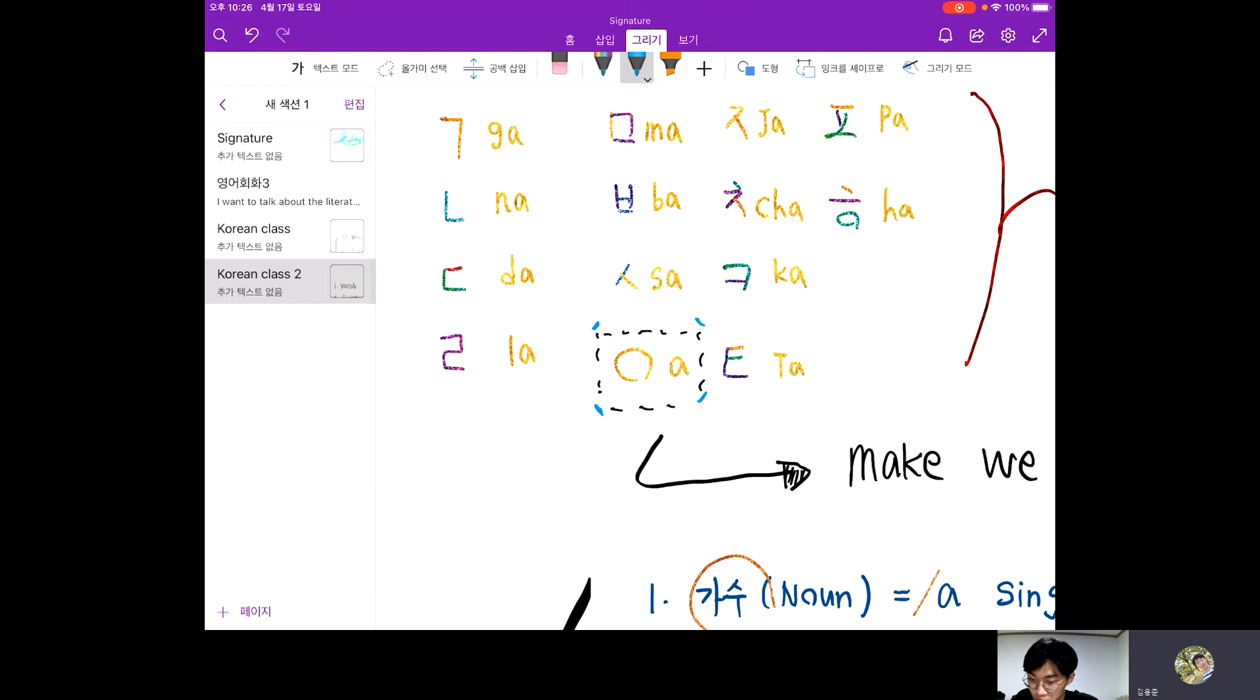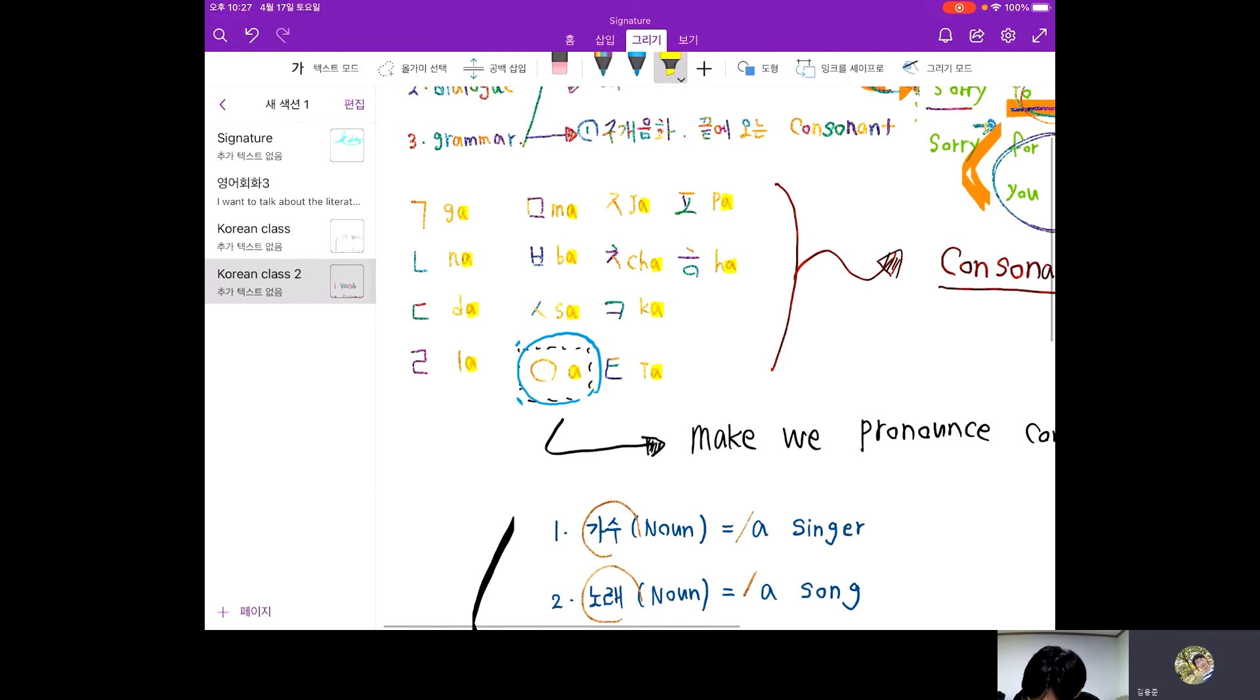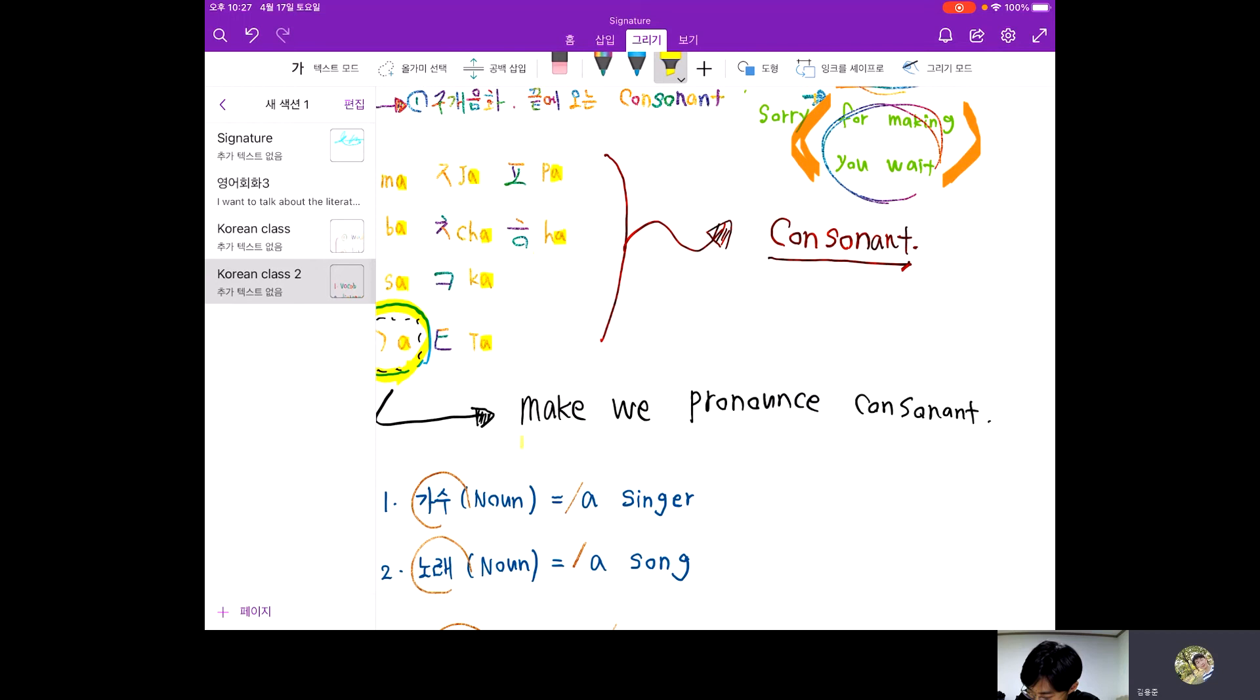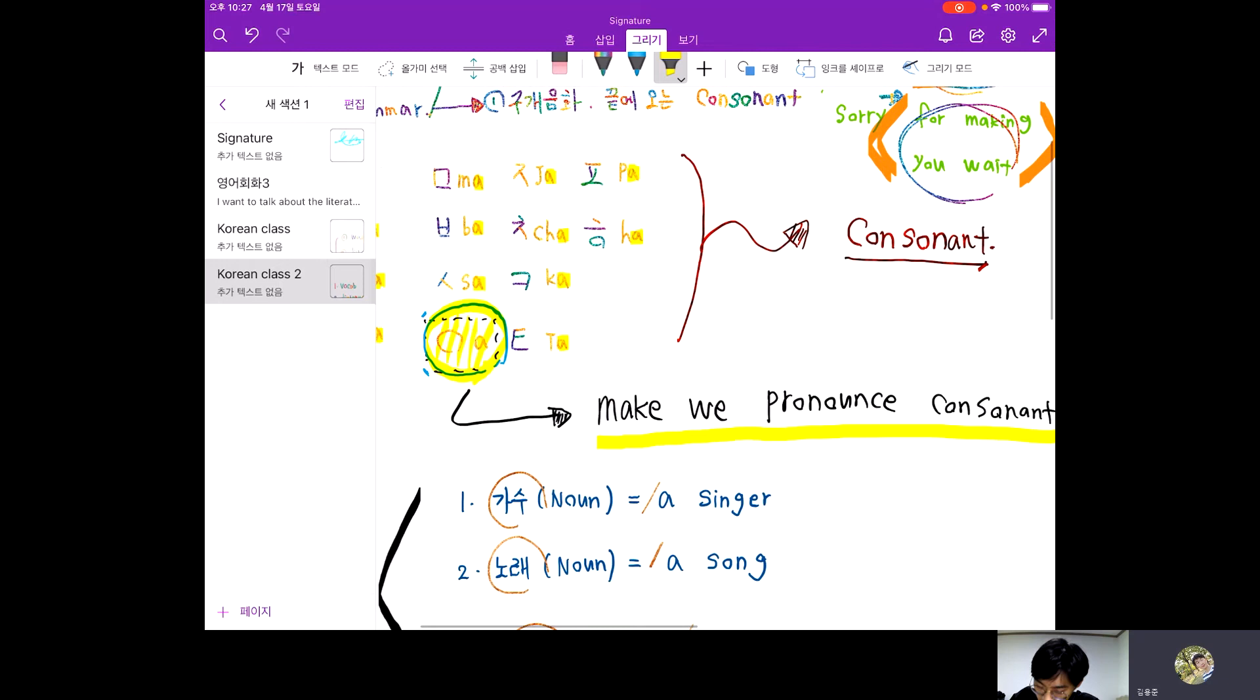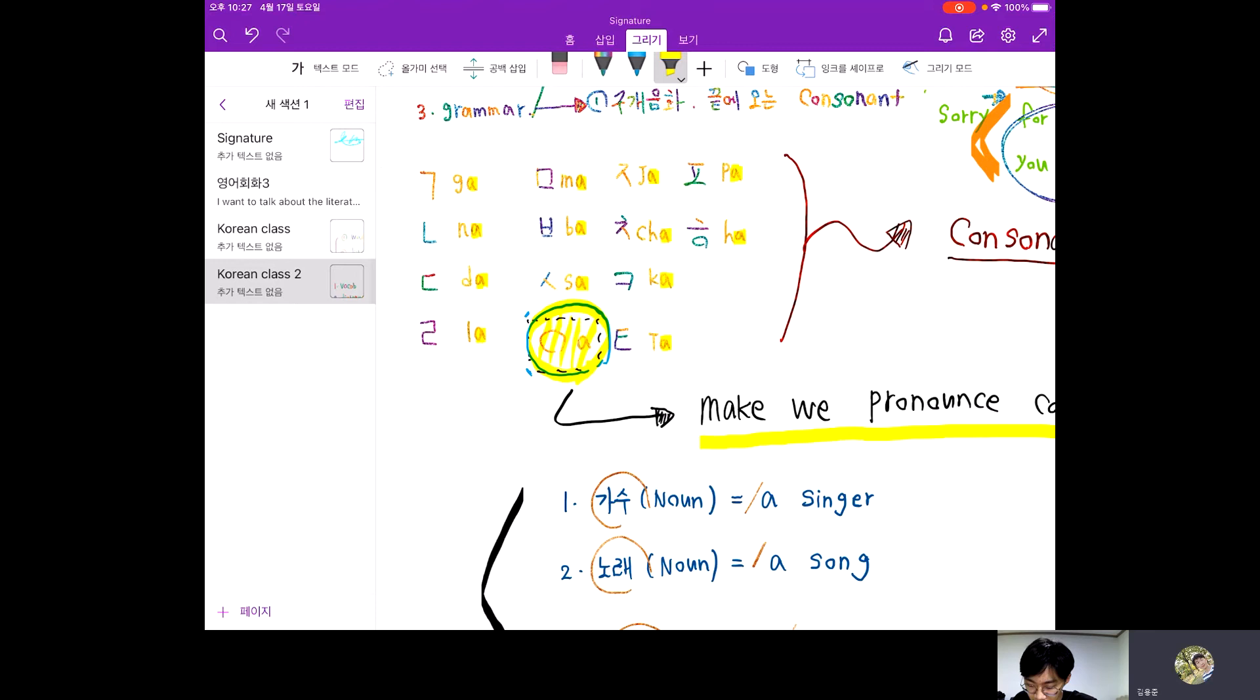Please remember it. I will talk about this sound, a. This a sound, we can find in everywhere. It means this a sound make we pronounce consonant. This sound makes us available to speak consonant. Could you understand it? Please remember it.